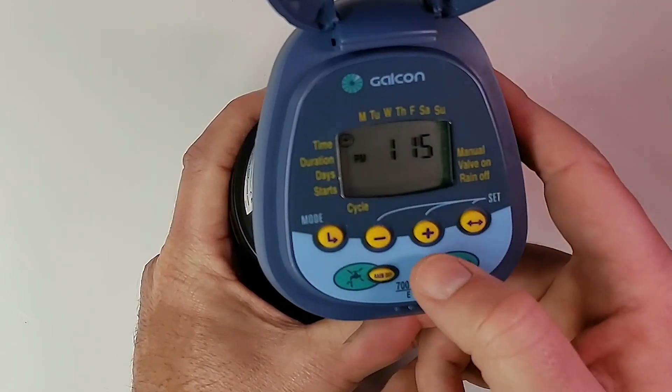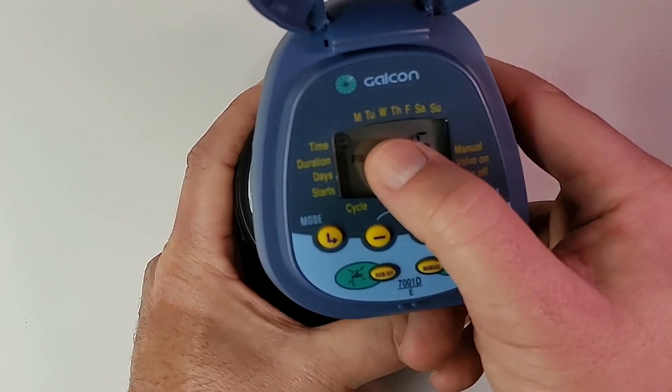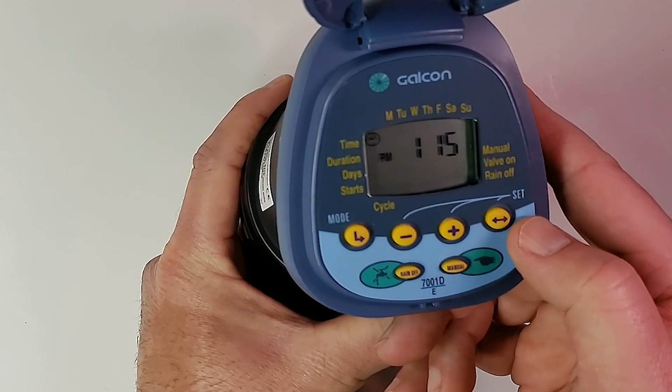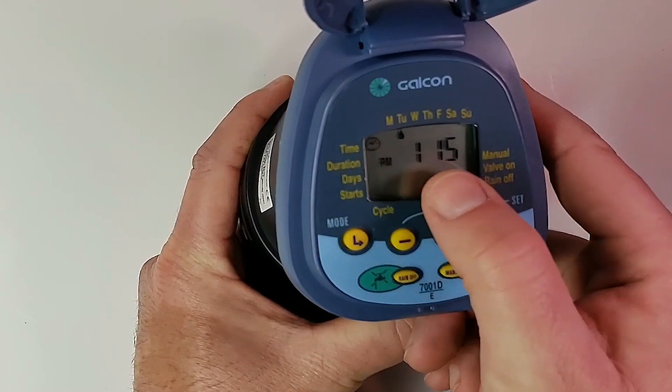Then we're going to hit the set button again. It is not Monday, we're going to make it Tuesday. So we're going to hit the plus button, moves that little drop over to Tuesday. Now it's Tuesday, 1:15. We want to hit the enter button to save everything.